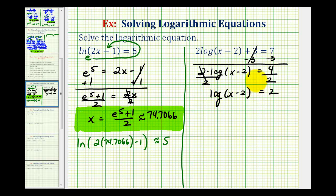Now we want to write this as an exponential equation. It's common log, so the base is 10. The exponent is two, and the number is x minus two. So 10 to the second power equals x minus two.